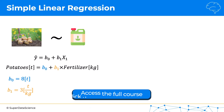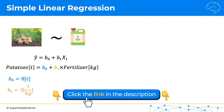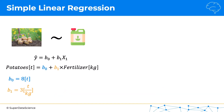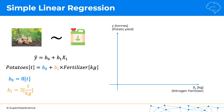What does this mean in terms of the graphical representation? How can we better understand this on an intuitive level? Let's plot a simple scatter plot. On the x-axis we have nitrogen fertilizer used in kilograms — that's our x1 variable — and on the y-axis we have the potato yield in tons. On the scatter plot we have several data points.